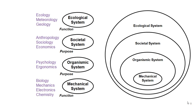Across those four classes of systems, there are many fields engineers should study. For mechanical systems: biology, mechanics, electronics, and chemistry. For organismic systems: psychology and ergonomics. For societal systems: anthropology, sociology, and economics. For ecological systems: ecology, meteorology, and geology. When asked what one elective my systems engineering students should take, I always answer the same: anthropology. If you're designing or modifying societal systems, anthropology is the branch of knowledge to become most conversant in over time.